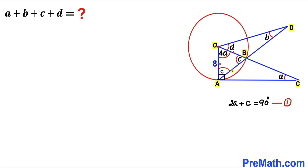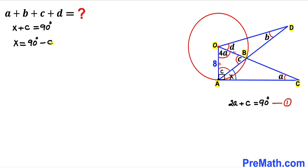Let's label angle BAC as X. We can see that the whole angle OAC is 90 degrees, which is the sum of the two individual angles C and X. So angle X plus angle C equals 90 degrees, meaning angle X equals 90 degrees minus C. Let's call this Equation 2.